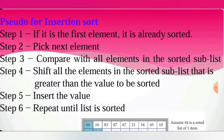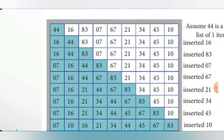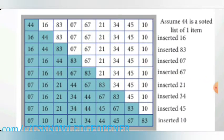In this example, there are 9 values. We assume the first element is already sorted. Then we take the second element, which is 16. We compare it: 16 is less than 44, so we swap them. Then 44 moves right and 16 is placed in the correct position.